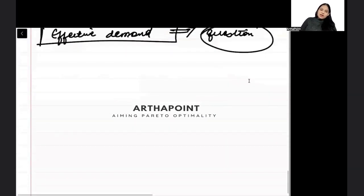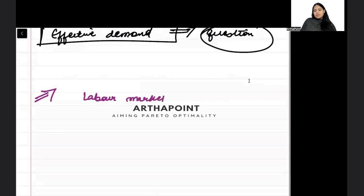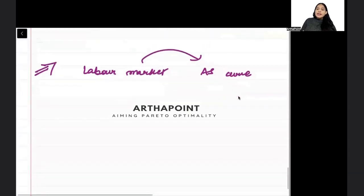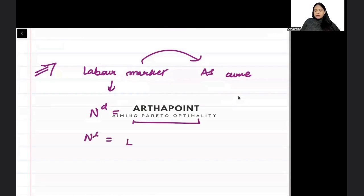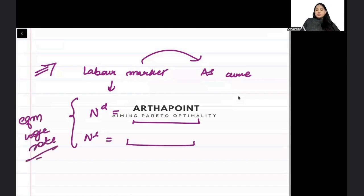One last thing you have to do here is the labor market, because from the labor market we derive the AS curve. When we talk about the labor market, questions that can be asked in the exam include: if I give you an equation for demand of labor and an equation for supply of labor, find the equilibrium wage rate in the market, or find the equilibrium amount of labor in the market.